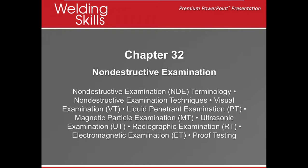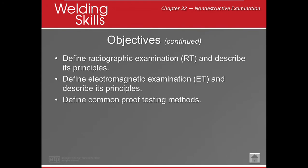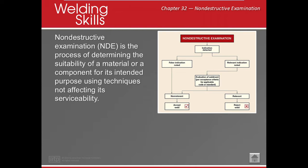Welcome to Chapter 32: Non-Destructive Examination. When we talk about non-destructive, we mean we are not going to destroy the part in order to look at it. The number one type of non-destructive examination used is visual examination, or VT. When we talk about non-destructive examination and look at this chart, they refer to 'indication detected' — seeing something that can be good or bad.